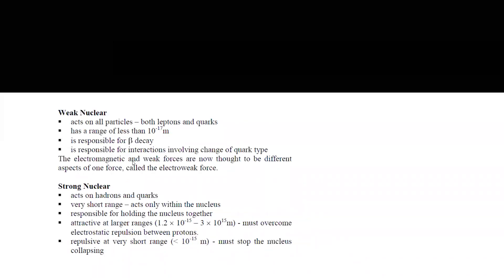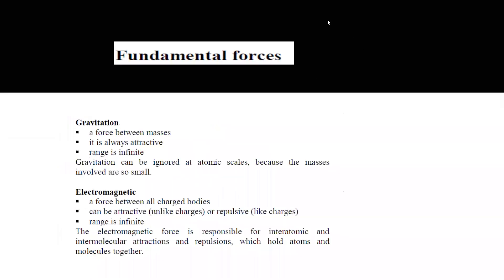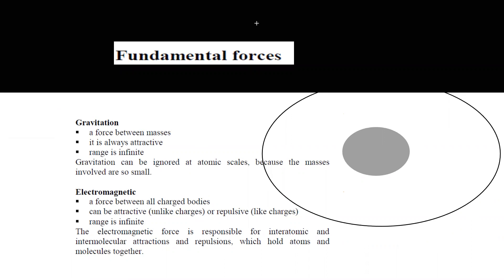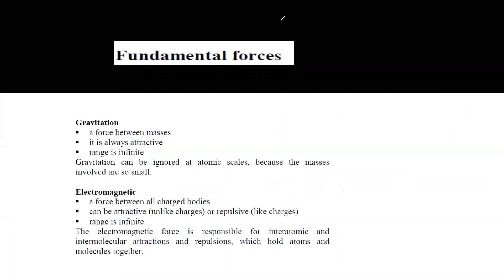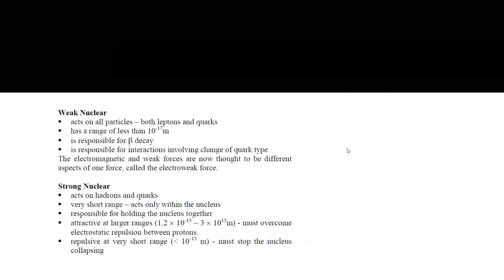Particles can experience more than one force simultaneously. For example, two protons in a nucleus: a proton has mass so it has gravitational force; it has charge so it has electromagnetic force; it is made of quarks within short range so it also has strong nuclear force. Three forces can exist at the same time, and there are ways to calculate which is stronger.